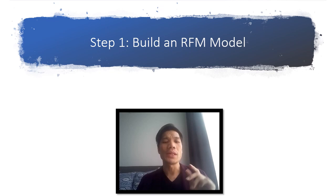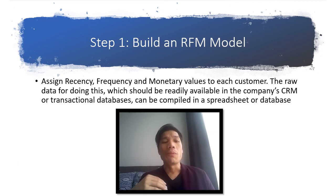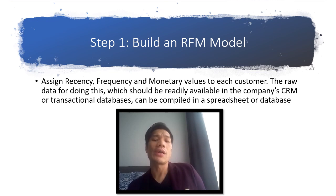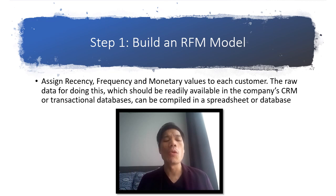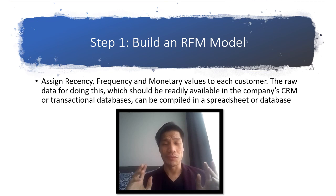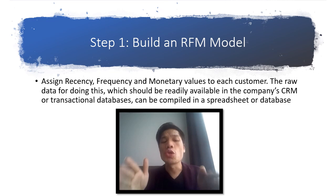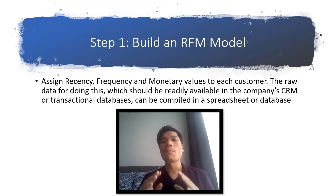To build an RFM model, you assign recency, frequency, and monetary values to each customer. The raw data should be readily available in the company's CRM or transactional databases and can be compiled in a spreadsheet. Recency is simply the time since the customer's most recent transaction — most businesses use days, though weeks, months, or even hours may make sense. Frequency is the total number of transactions made during a defined period. Monetary is the total amount spent across all transactions, or per their latest transaction.